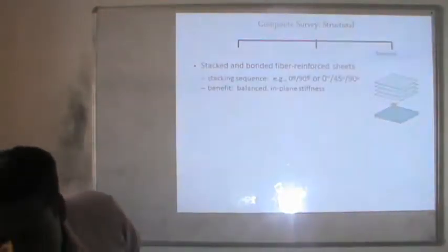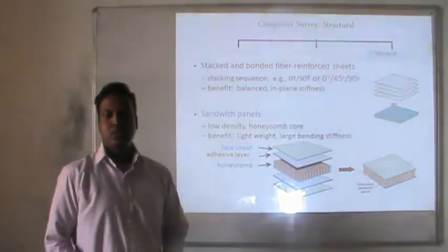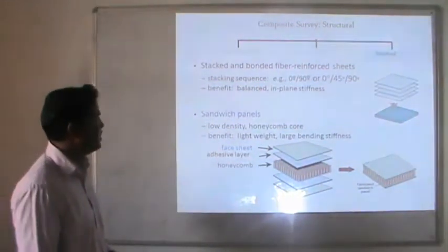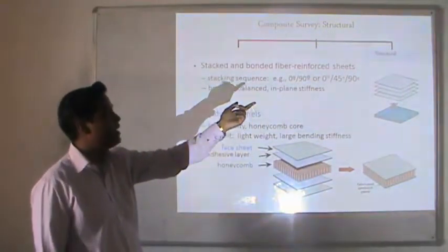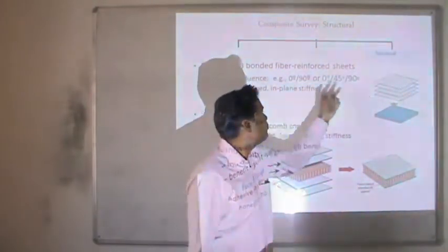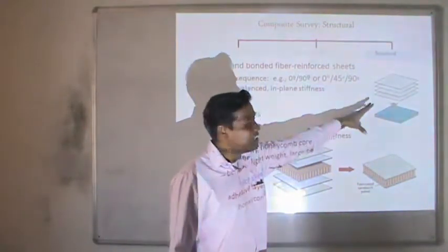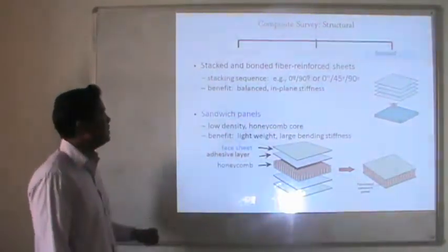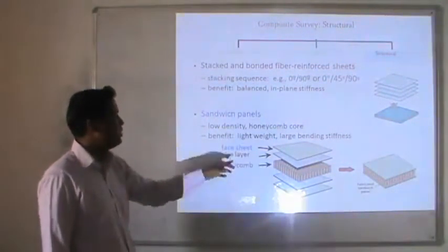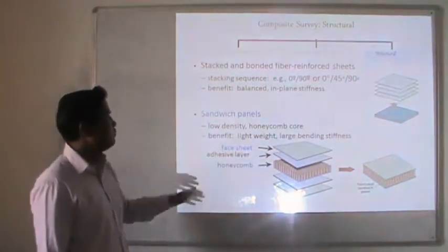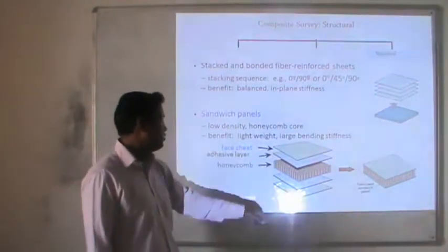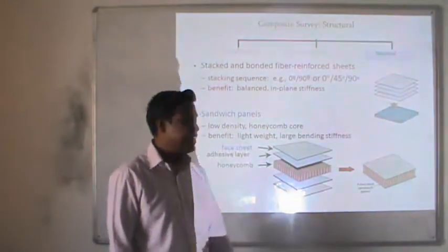For structural composites, the laminate uses bonded fiber reinforcement sheets with stacking sequences such as 0°, 90°, 0°, or 0°, 45°, 90° arrangements to achieve balanced in-plane stiffness. These different sheet categories are combined into a compact laminate form. The sandwich panel uses a low-density honeycomb core for benefit of lightweight and high stiffness. The structure consists of face sheets bonded with an adhesive to the honeycomb core, forming a fabricated sandwich panel.